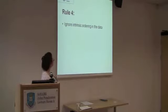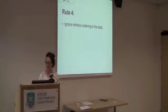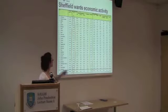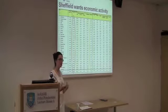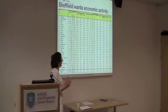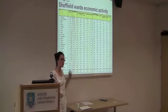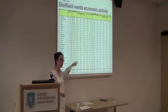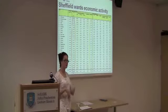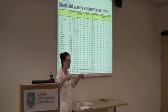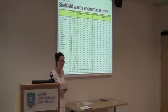Rule four: ignore the intrinsic ordering in the data. That data was ordered alphabetically, so a local person can find their area — say NetherEdge — but what they can't make out from this table is how NetherEdge compares to other areas. You can't do any comparisons; you have to start analysing the data yourself if you want to do that.